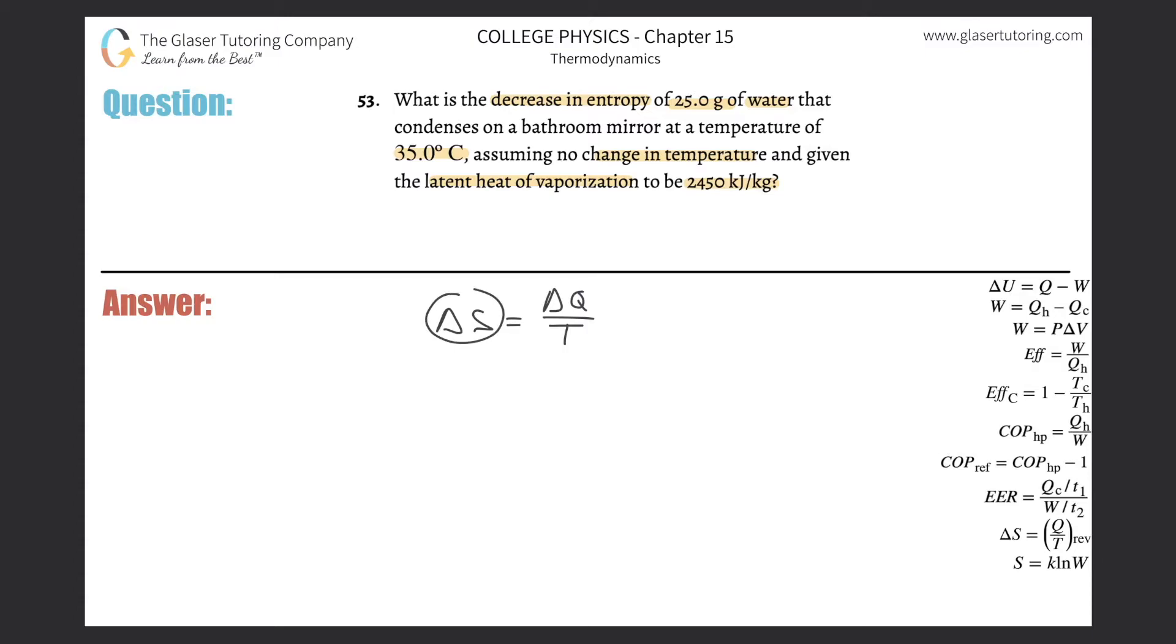It says decrease in entropy, so we know there's going to be a negative. If this is negative, one of these has to be negative. Temperature in Kelvin is never negative—it's an absolute temperature, either zero or positive—so the negative is coming from the heat transfer.